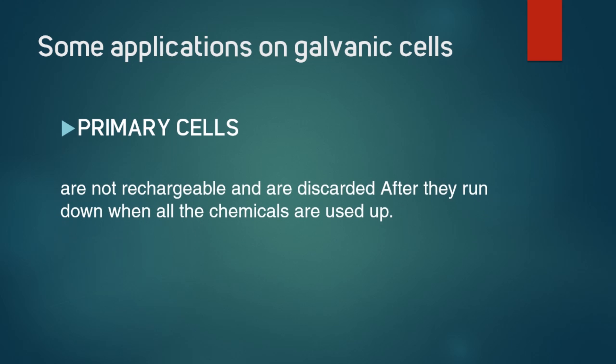Primary cells are not rechargeable and are discarded after they run down when all the chemicals are used up. In other words, no more chemical potential energy available or the chemicals in the battery can react to produce electrical energy.